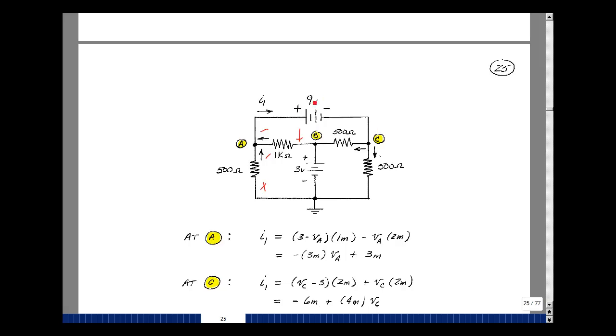Let me sum the currents here. I've got the current I1 entering, and I'll make these two leave so I can put I1 again on the other side of the equation. And I'm going to just set these two equal to each other to get rid of I1. The current going in this direction is going to be V sub C minus 3 divided by 1 half of K, or times 2 milli. And then the current in here is just simply V sub C divided by 1 half of K, or times 2 milli.